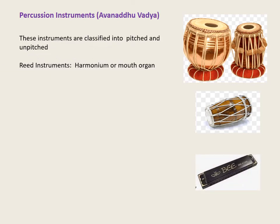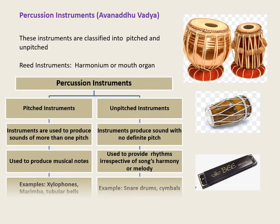In pitched instruments, they are often used to produce more than one pitch and musical notes are produced. In unpitched instruments, sounds are produced with no definite pitch, and rhythms irrespective of songs, harmony, or melody are produced. Examples of pitched instruments are xylophones, marimba, and tubular bells. Examples of unpitched instruments are snare drums and cymbals. Reed instruments are those musical instruments that produce sound when air is blown over them; examples are harmonium and mouth organ.